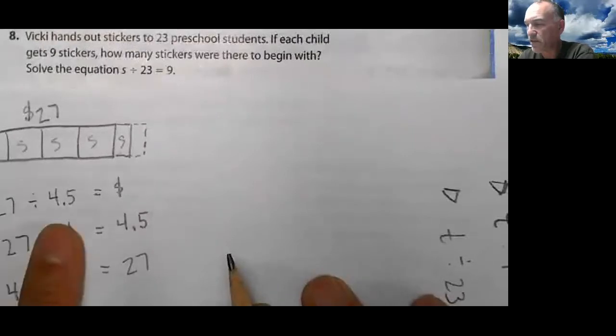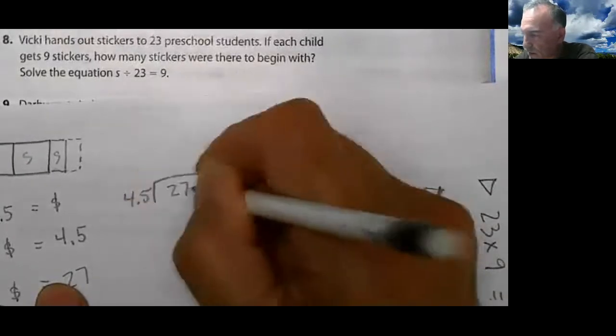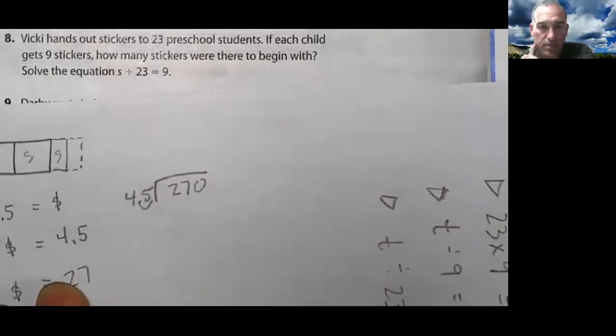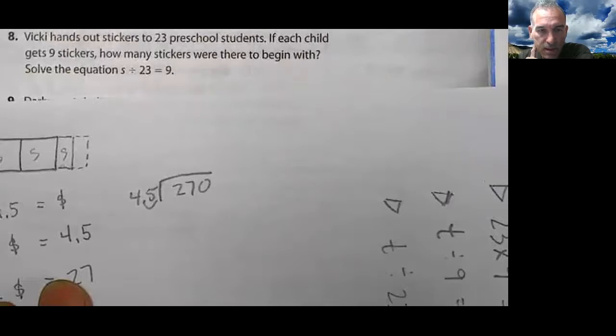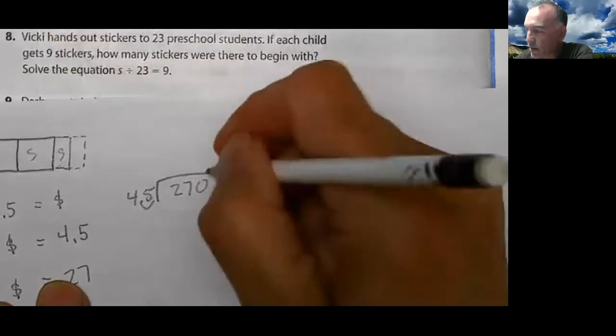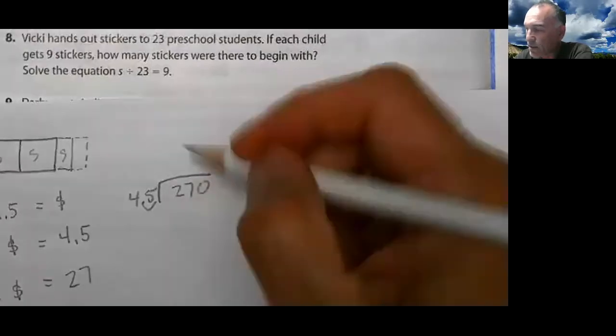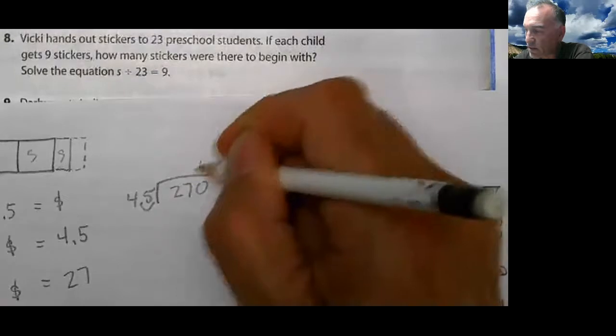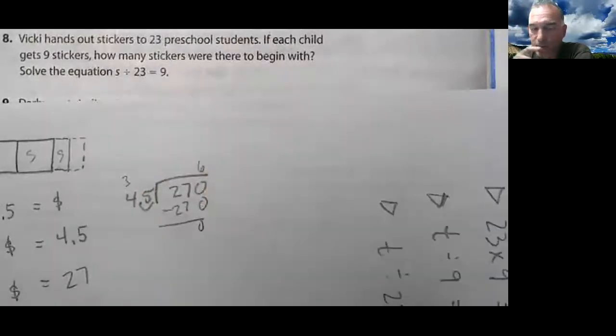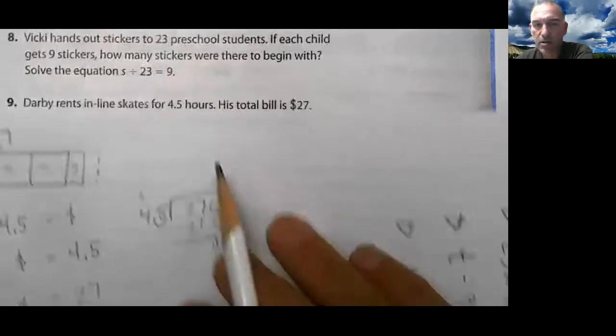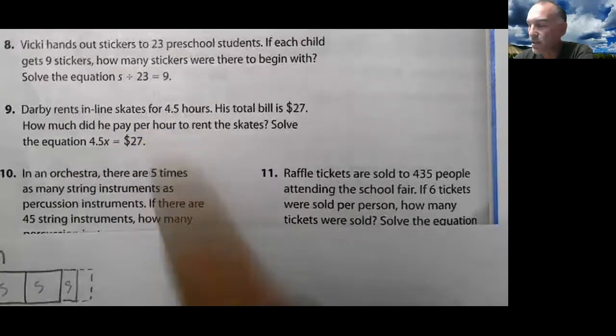How about this ugly one? 27 divided by 4.5. Shall we try that one? That one's ugly. Let's try it. I'm going to move this. Boom. Makes sense? 45 into 270. How many times is it? Is it 8? Could it be 8 times? 8 times 5. No. Could it be 6? 6 times 5. Shall we try a 6? 6 times 5 is 30? 6, 20. Oh, look at that. So 6. What does 6 mean? I look back at the question and it says, how much did he pay per hour? $6 per hour. Makes sense? $6 per hour.